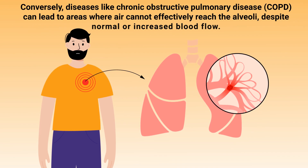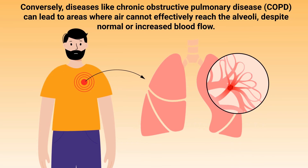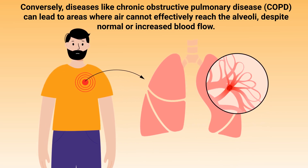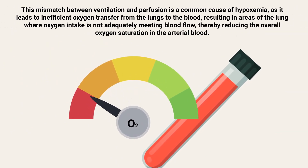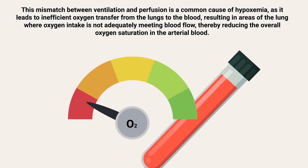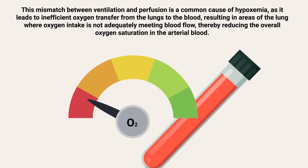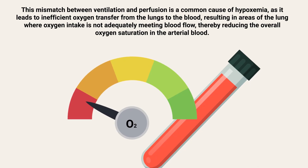Conversely, diseases like COPD can lead to areas where the air cannot effectively reach the alveoli, despite normal or increased blood flow. This mismatch between ventilation and perfusion is a common cause of hypoxemia, as it leads to inefficient oxygen transfer from the lungs to the blood, resulting in areas of the lung where oxygen intake is not adequately meeting blood flow, thereby reducing the overall oxygen saturation in the arterial blood.